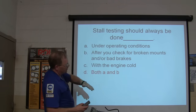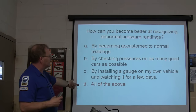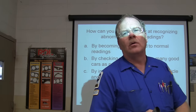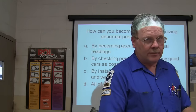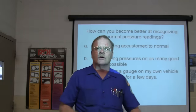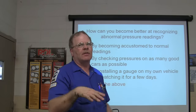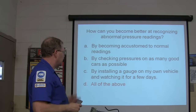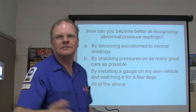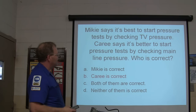Broken mounts or bad brakes — you don't want your engine trying to jump out of the car under operating conditions. How can you become better at recognizing abnormal pressure readings? By becoming accustomed to normal readings by checking pressures on as many good cars as possible. This goes with everything — if you want to find out what your scan tool is supposed to be reading, look at it on a bunch of cars that work right, get used to that. When you look at a car that's got a problem, you'll know right away. If it's an in-range failure, it ain't going to throw you a code — but you know you've got a problem. By installing a gauge on your own vehicle and watching it for a few days — that'd be cool, wire a gauge up in the dash. Carrie is correct — it's better to start pressure testing by checking mainline pressure. You want to know what your baseline is.